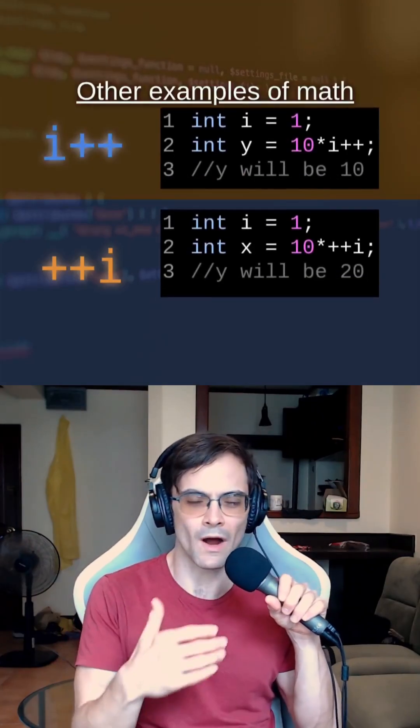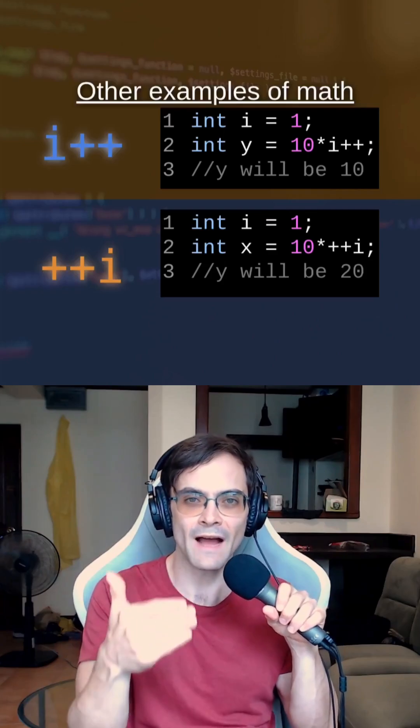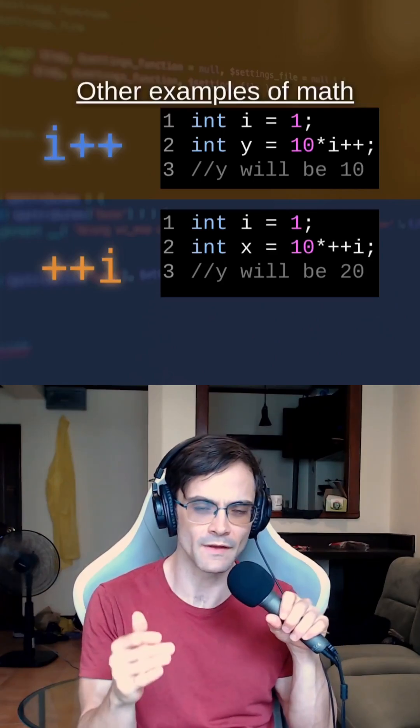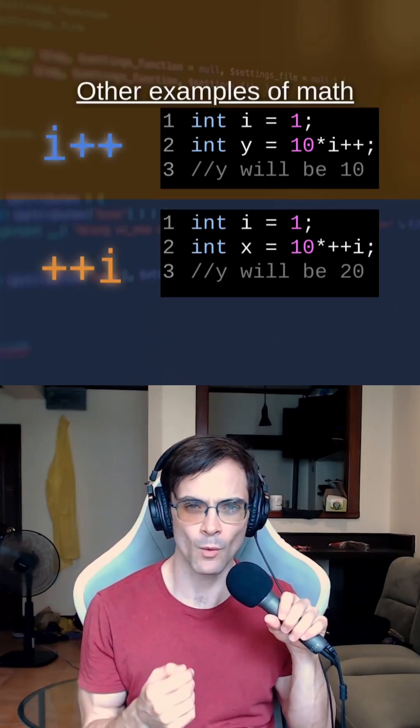So in the top one, Y will be equal to 10. It's equal to 10 because we used the value of i before we did the increment, so it just multiplies by 1, giving us 10.